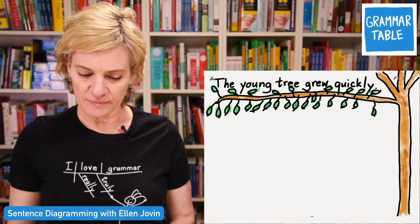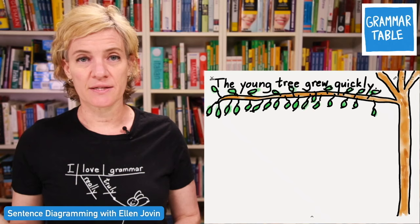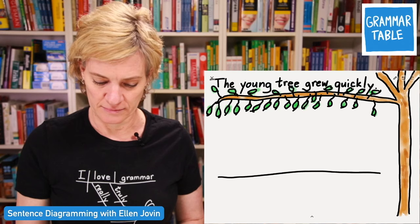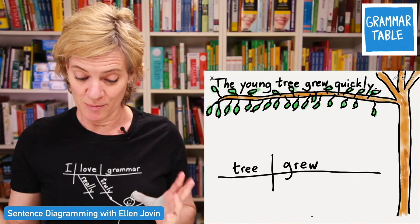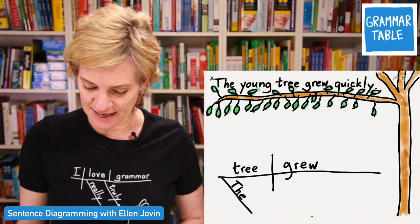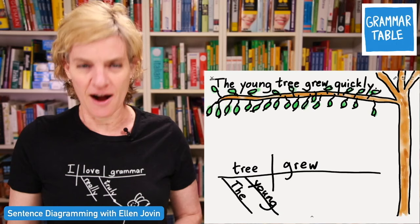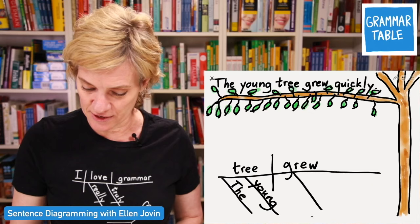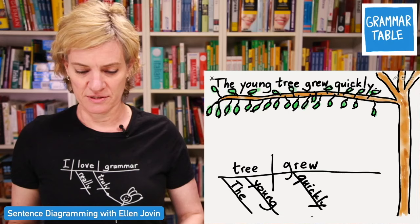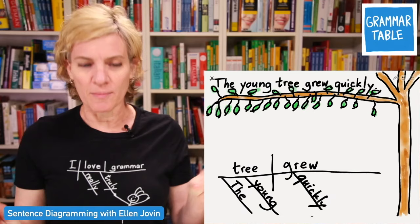Here we have 'the young tree grew quickly.' What is the grammatical subject and what is the verb? Tree is the subject and grew is the verb. Things are starting to get more exciting because we have multiple things to stick under 'tree.' This was very exciting to me as a kid — the more complicated the diagram got, the fancier I felt. We are up to a full five-word sentence now. Quickly is another adverb, so that goes under grew.